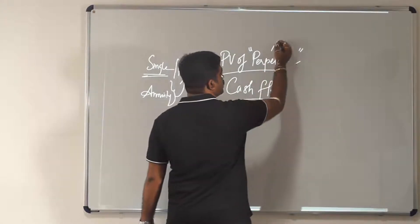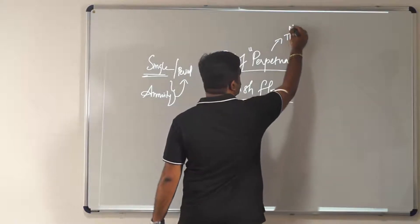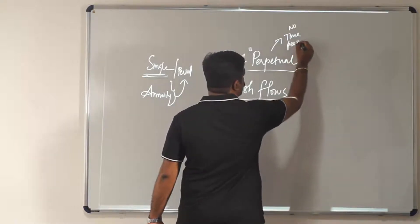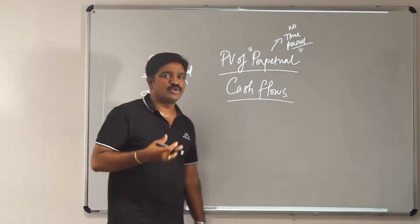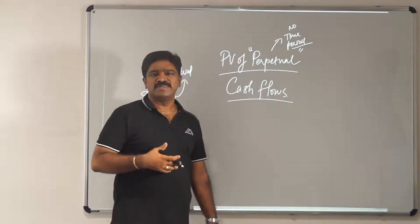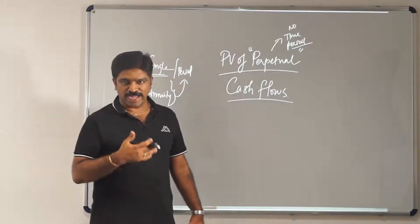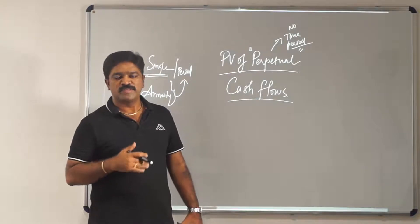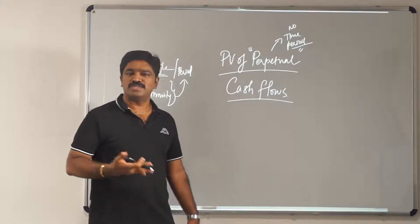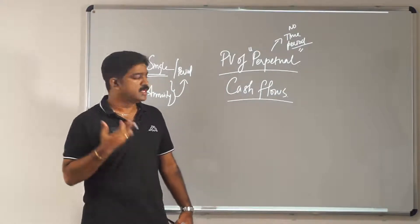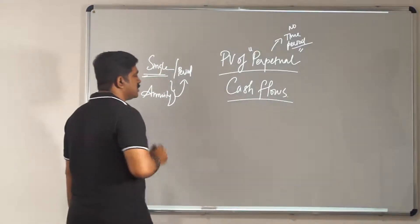But what is perpetual? Perpetual means there is no time period — you are going to receive it indefinitely, endlessly. So how do you find out the present value in that case? For 10, 20, or 30 years we can use our standard formula since it accounts for n, the time period. But what do you do with 100 years, thousands of years, or infinite years?